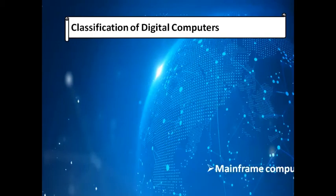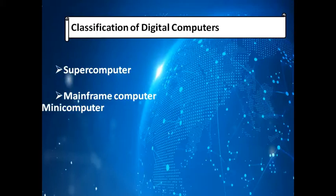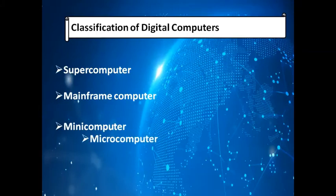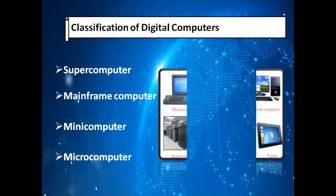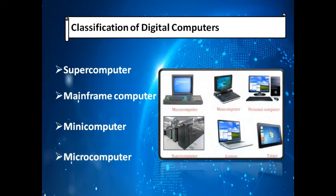Now the next topic is the classification of digital computers. We can classify digital computers on different factors: physical size, cost, and speed. Based on these factors, computers are classified into four categories: supercomputers, mainframe computers, minicomputers, and microcomputers. This general classification is based on the size and speed of the computer.